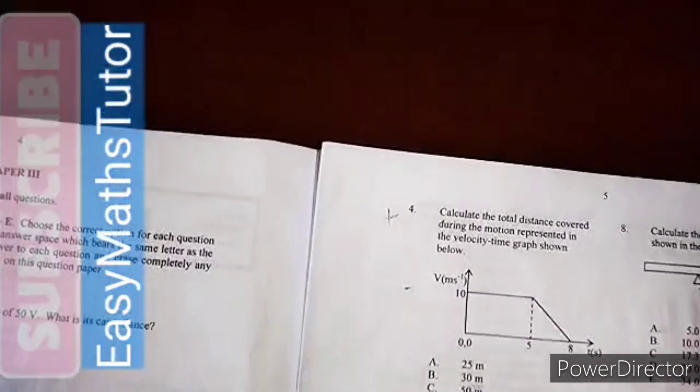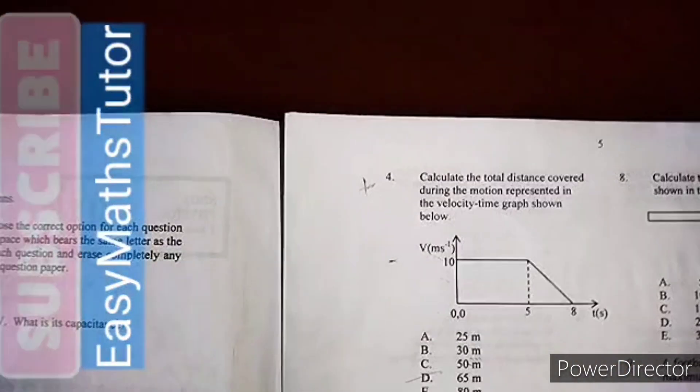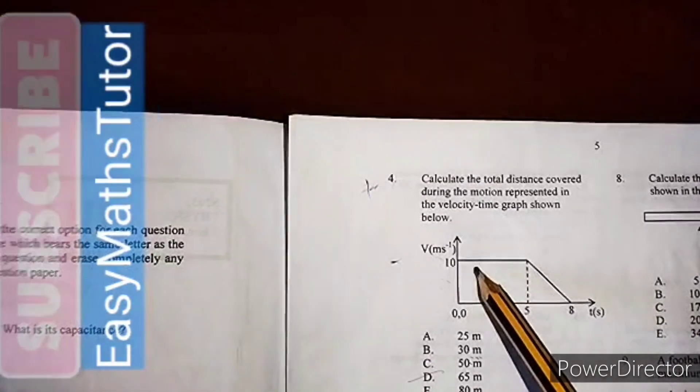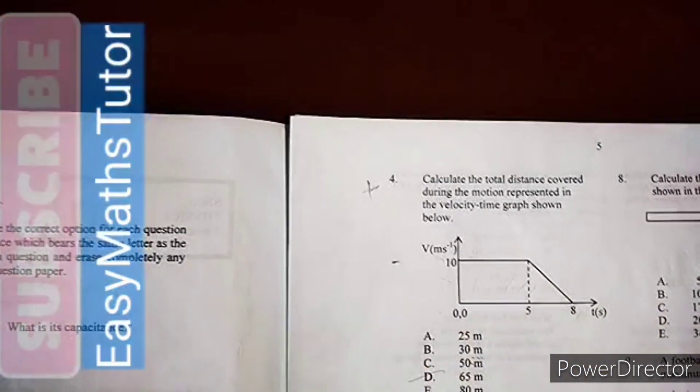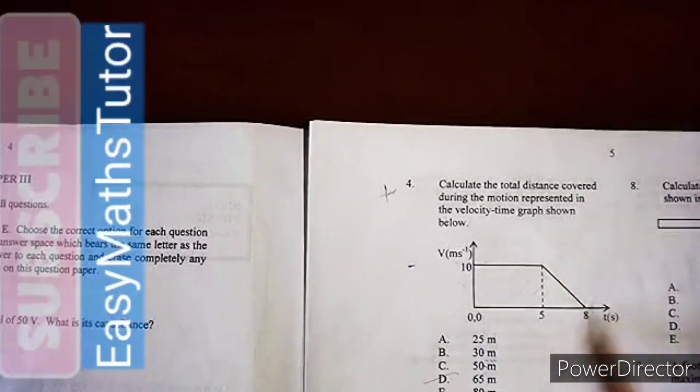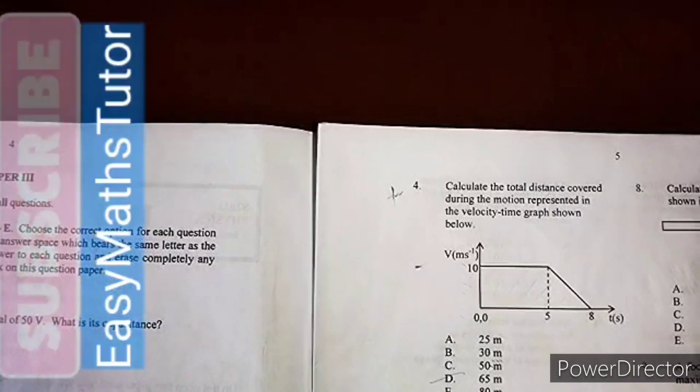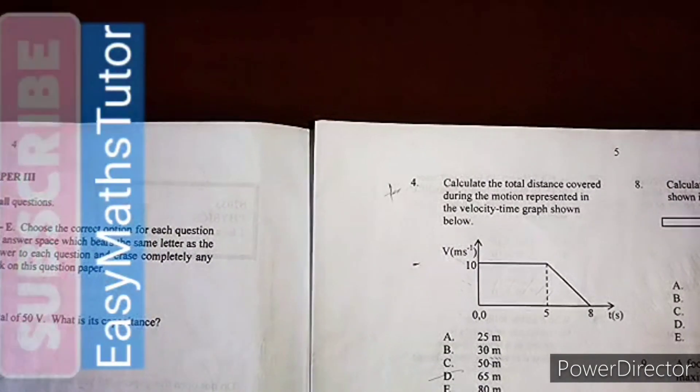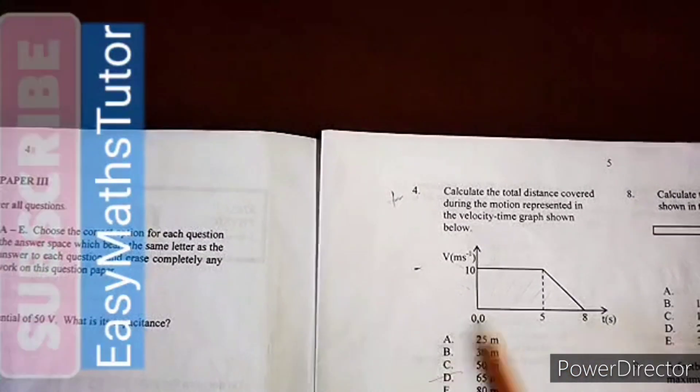Now when you see a graph plotted velocity versus time, that's called the velocity-time graph. We should know that the area under this graph is known as the total distance covered by the object in motion.